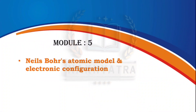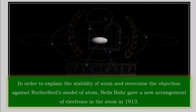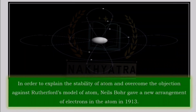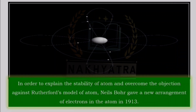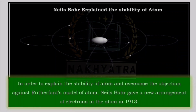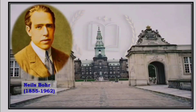Hello class, night students. This is our lecture number three of the chapter 'Structure of the Atom.' Here we will discuss Niels Bohr's atomic model and electronic configuration. In order to explain the stability of the atom and overcome the objections against Rutherford's model of the atom, Niels Bohr gave a new arrangement of electrons in the atom in 1913.